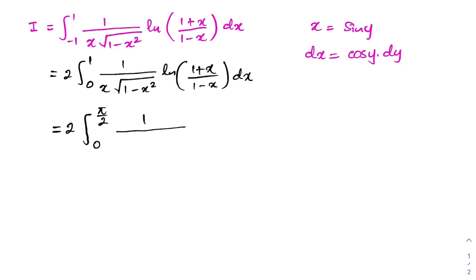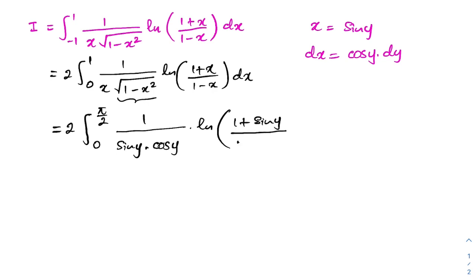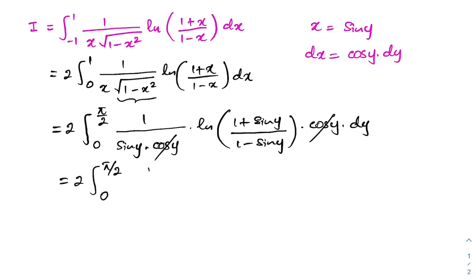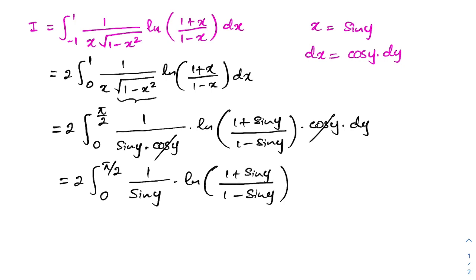So the new limits are 0 to pi over 2. We have 1 over x, which is sin(y), and square root of 1 minus x squared becomes square root of 1 minus sin squared(y), which equals cosine(y). So we get cosine(y) times natural log of (1 plus sin(y)) over (1 minus sin(y)) times dx, which is cosine(y) dy. The cosine(y) terms cancel, giving 2 times the integral from 0 to pi over 2 of 1 over sin(y) times natural log of (1 plus sin(y)) over (1 minus sin(y)) dy.